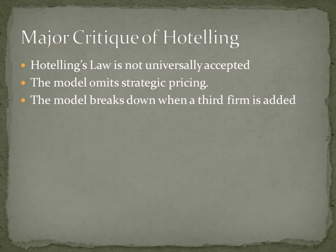A common critique of Hotelling's model is that it omits strategic pricing, which pushes firms apart. A 1979 Econometrica paper on Hotelling's stability and competition argues that while the price competition in Hotelling's paper correctly addressed the Bertrand paradox, explaining how firms can compete in prices and still make positive profits, Hotelling made an error in reasoning in the second part of the paper where he attempts to endogenize the locations of the firms in his model and establishes his so-called law.